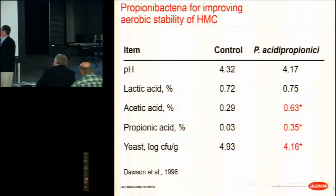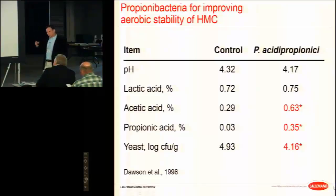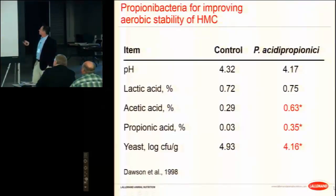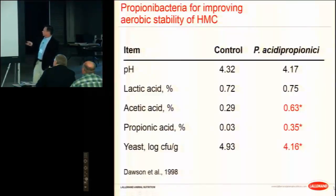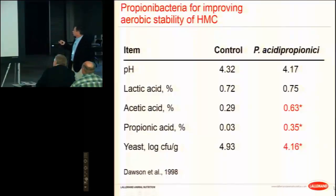Here is a piece of research showing the profile you should expect when using a propionic bacterium in high moisture corn - which has a slower rate of fermentation and a slightly higher terminal pH compared to corn silage. The amount of lactic acid was basically the same, but we can see the effect on amounts of acetic and propionic acids. The population of yeast on the log scale was almost 10 times lower in the treated high moisture corn compared to untreated.